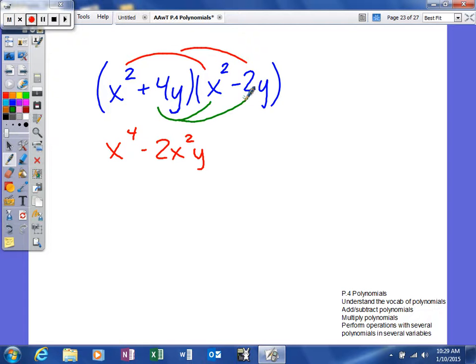And lastly, I'm going to multiply this times both of those. So it'll give me a positive 4x squared y, and then minus 8y squared.